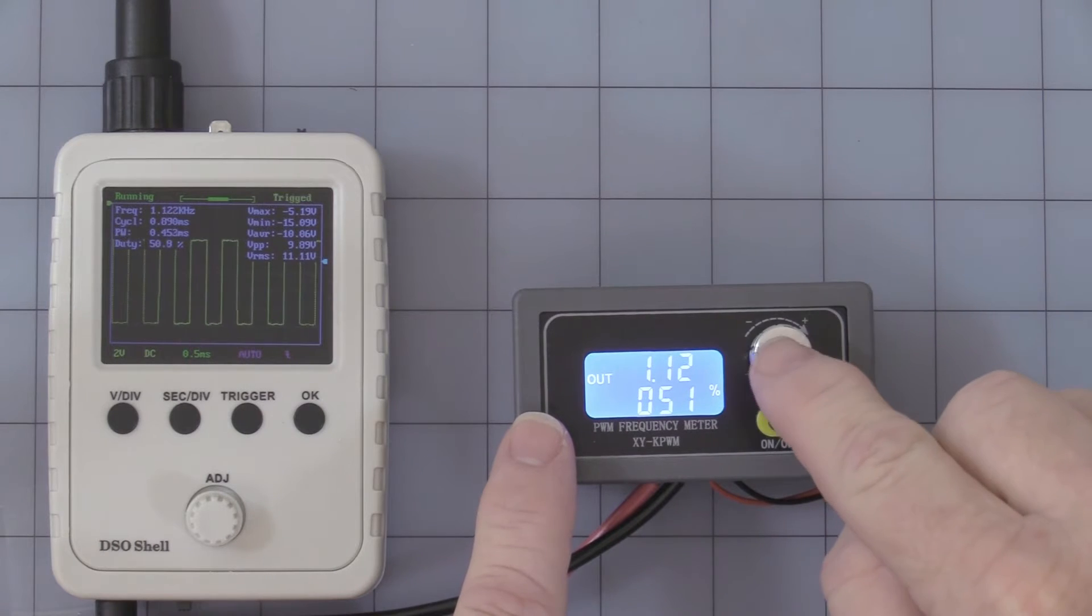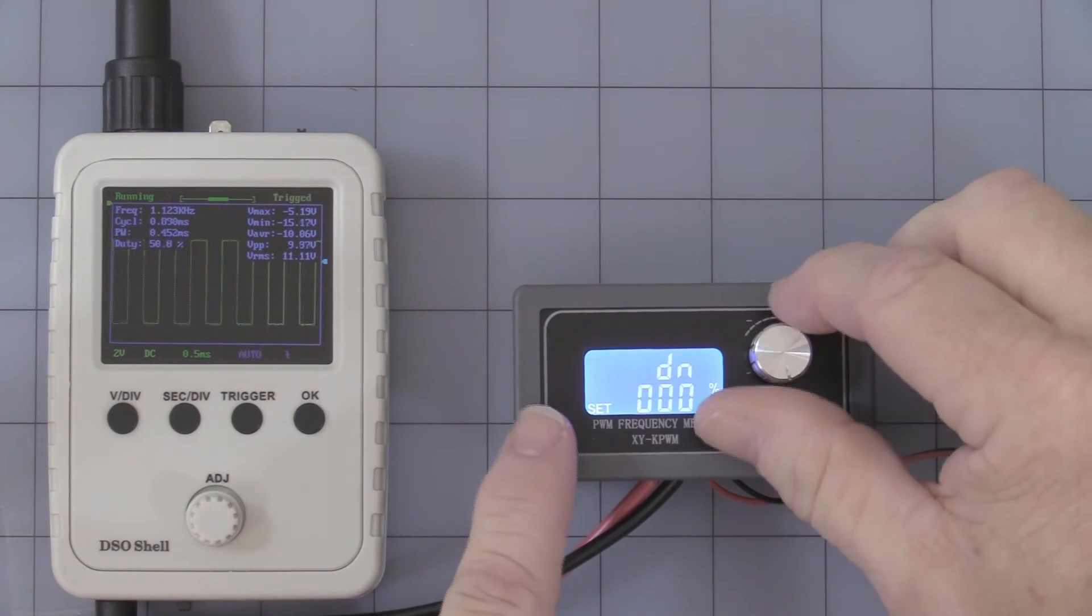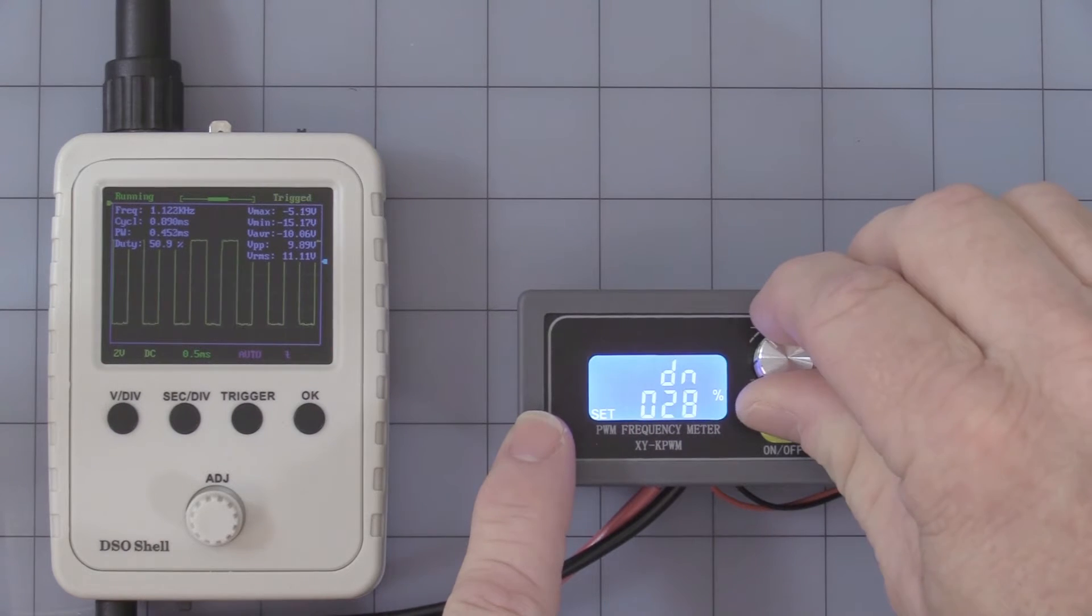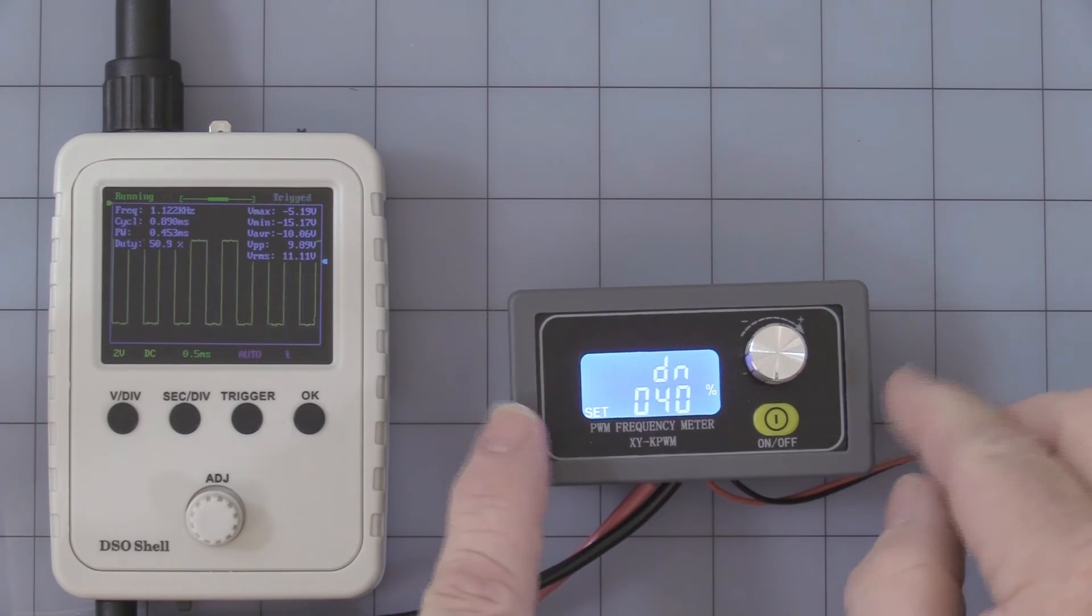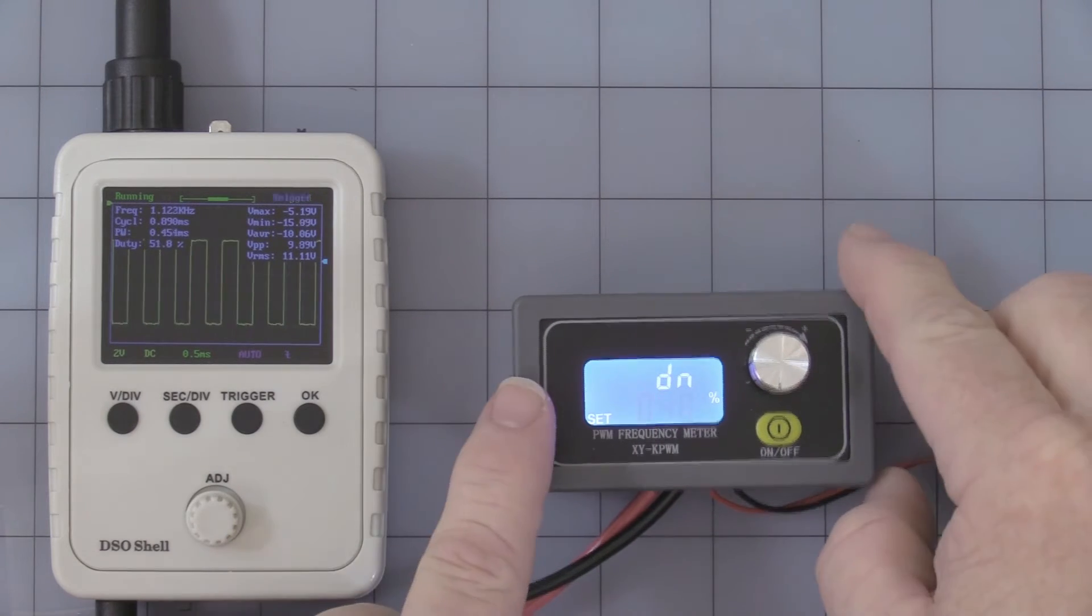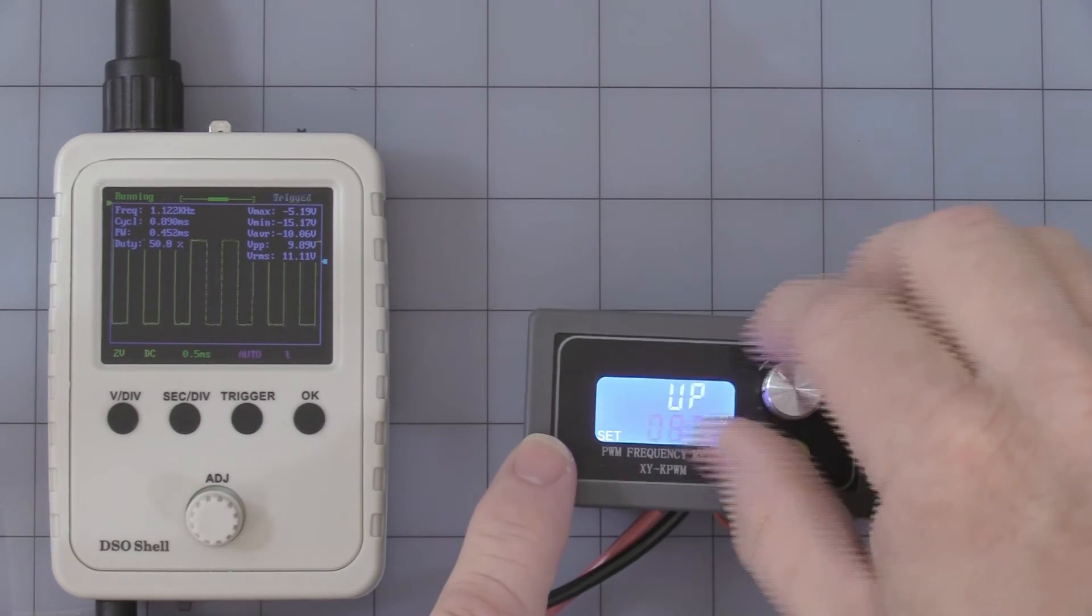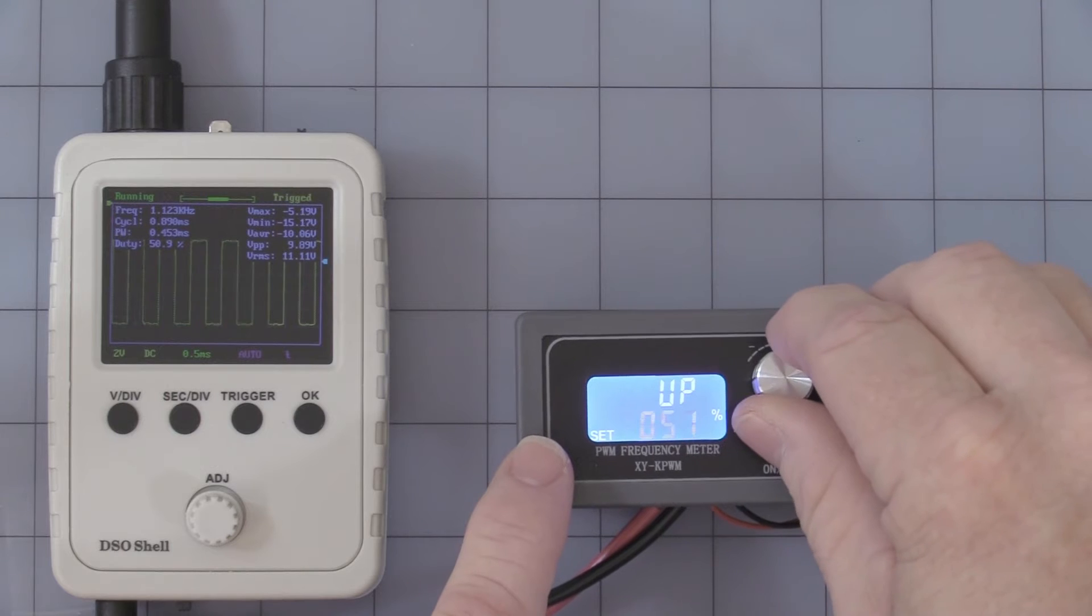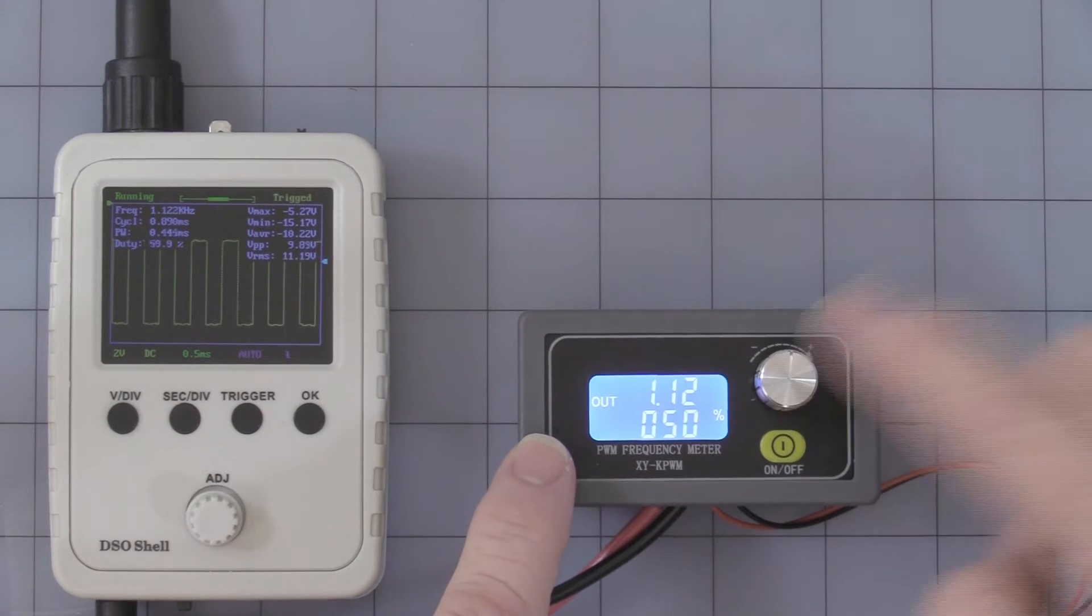If you press and hold the button for two seconds, this is if you want to set a range for your duty cycle. Let's say you want to preset a range that you can't go above or below. DN is for the lower end, UP is for the upper end. So let's make it between 40 and 50% duty cycle. Then press for a couple of seconds and you're back.